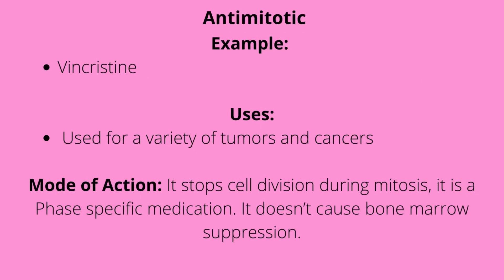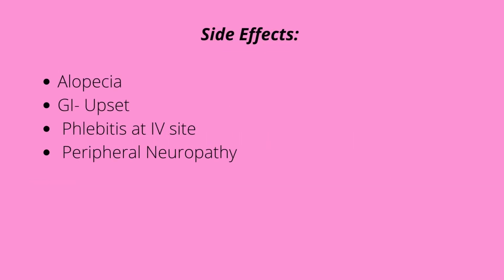Vinca alkaloids — vincristine is an example. It's used for a variety of tumors and cancers. Its mode of action: it stops cell division during mitosis. It is a phase-specific medication, unlike doxorubicin which works in every phase. It does not cause any bone marrow suppression, which is a good thing. Side effects include alopecia, GI upset, phlebitis at the IV site, and peripheral neuropathy.